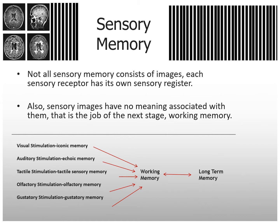Sensory memory is just raw data. When we talked about sensation versus perception, this is just the sensation part — not the perception, not making sense of anything. Visual stimuli go through iconic memory.